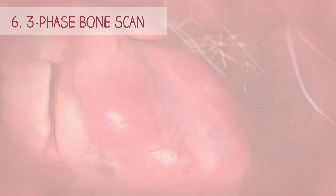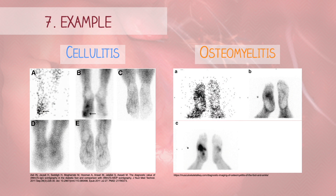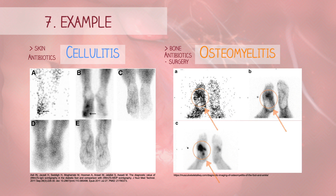Three-phase bone imaging is very helpful in distinguishing cellulitis from osteomyelitis. Cellulitis is an infection of the skin and the underlying tissues, typically treated with antibiotics, while osteomyelitis is an infection involving the bone, requiring more aggressive interventions such as long-term antibiotics and, in some cases, surgery. Osteomyelitis is typically three-phase positive, while in cellulitis there is increased blood flow and hyperemia in early phase imaging, but no increased tracer accumulation in delayed phase imaging. Bone scans can detect osteomyelitis weeks before changes are visualized on X-rays.